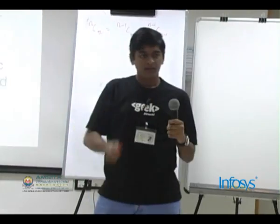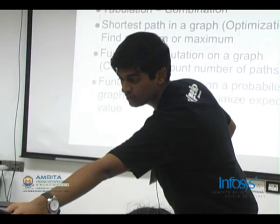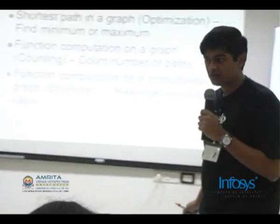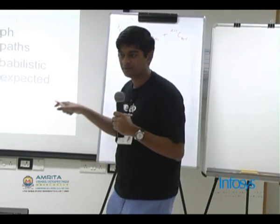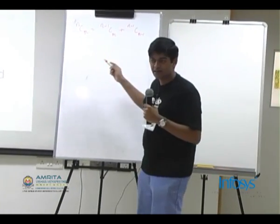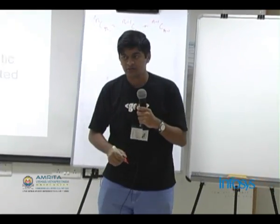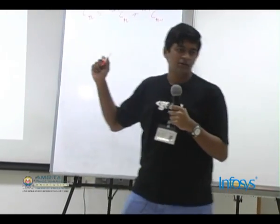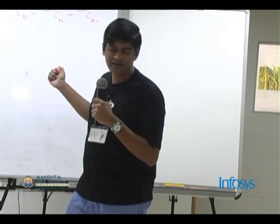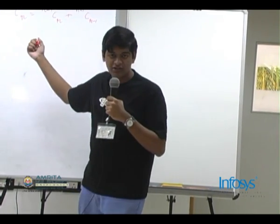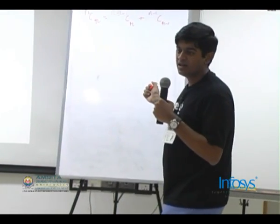Yesterday, Anshuman taught how to compute n choose r modulo p. The complexity for that is preprocessing order p and query answering time O(log n to the base p). We will now see a method with preprocessing O(n squared) and query answering O(1) time for computing n choose r modulo p. This method has the advantage that p does not need to be a prime.